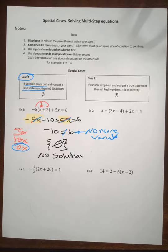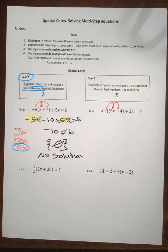Now let's look at case 2. We're going to use the distributive property. That's like multiplying by negative 1. So negative 1 times 3X is negative 3X, negative 1 times negative 4 is positive 4, and then I've got to recopy the plus 2X, and it equals 4.